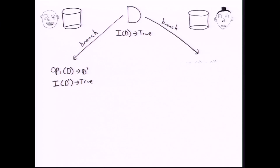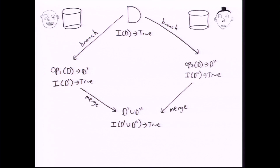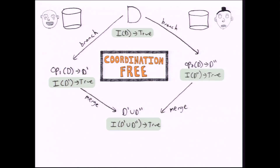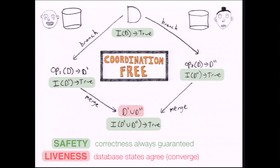At a high level, the way that we accomplish this and decide if a set of invariants is coordination-free is we essentially examine abstract executions of database states. If we have a single database with multiple users that want to concurrently perform operations, we need to decide when it's safe for them to branch multiple copies of this database and subsequently combine them into a valid database state. We can label the invariants as either coordination-free or not, and those that are coordination-free will ensure correctness is always maintained over all copies of state, and moreover the databases agree on a common value for each data item.